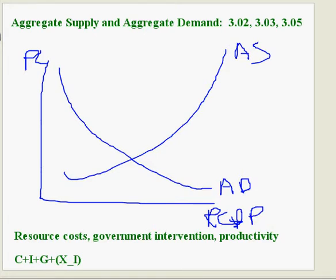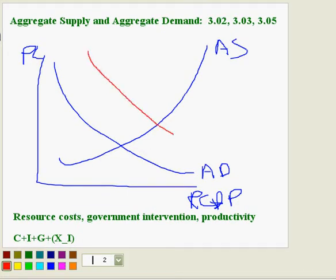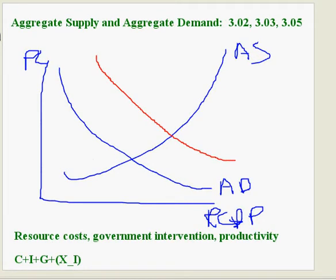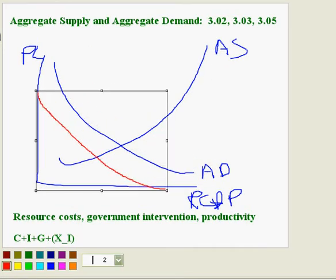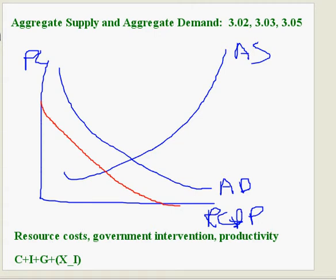Let's look at aggregate demand. Suppose that we see the government decreases personal taxes — aggregate demand would increase. If investment spending decreases, we would see a decrease in aggregate demand.